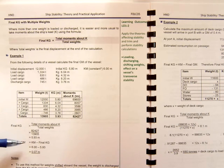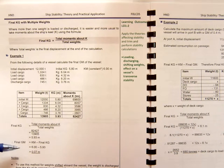So that's a fairly straightforward example of calculating the final KG and of course the final GM.